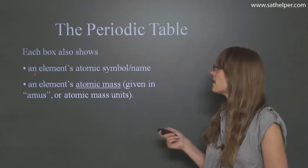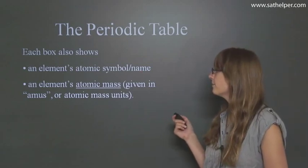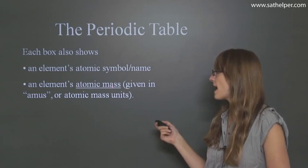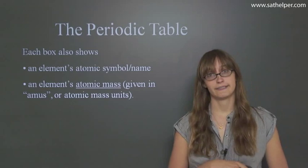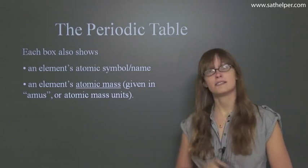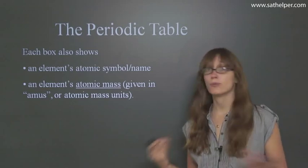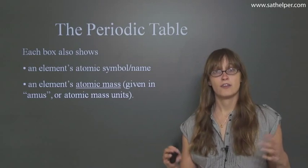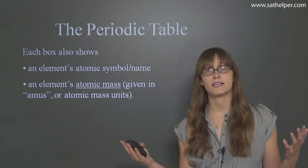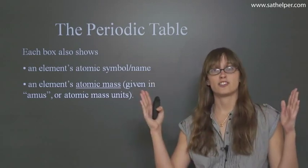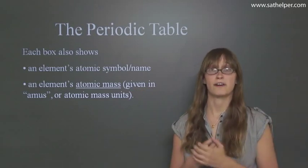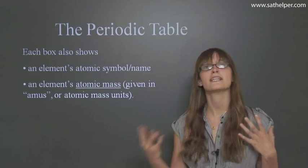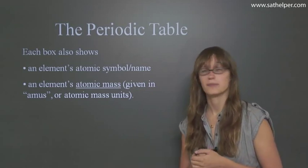Each box also shows an element's atomic symbol or name and an element's atomic mass, which is given in AMUs or atomic mass units. So an element's symbol or name is important because in problems they're not always going to write out the name of the element. Instead of saying aluminum, they might just say AL. So you have to know that AL corresponds to aluminum so you can look it up in the periodic table. So you have to memorize these symbols for the elements.